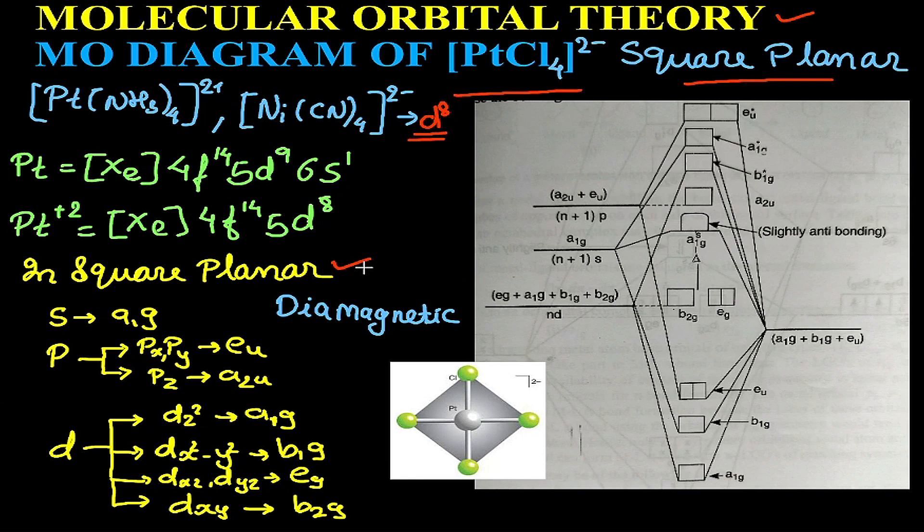The square planar complexes are formed by removing two electrons, that is the two upper and lower electrons, from the octahedral complex. This is the structure of PtCl₄, so when we remove those electrons, then we get a square planar structure.